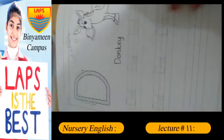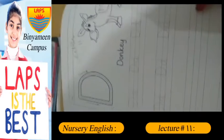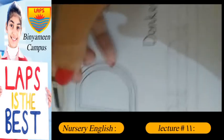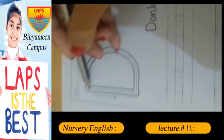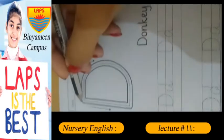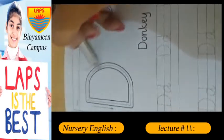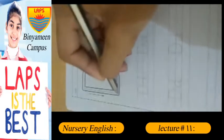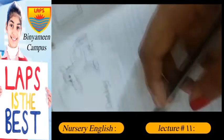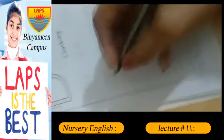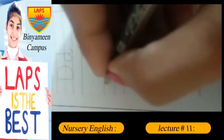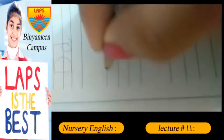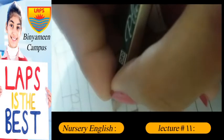This is a special tracing and self-writing. For capital D, we have a straight line and a half circle to this line.